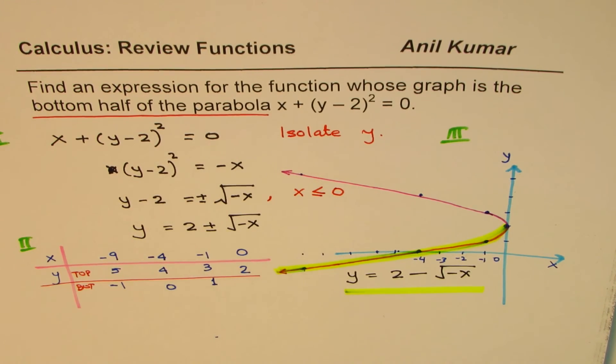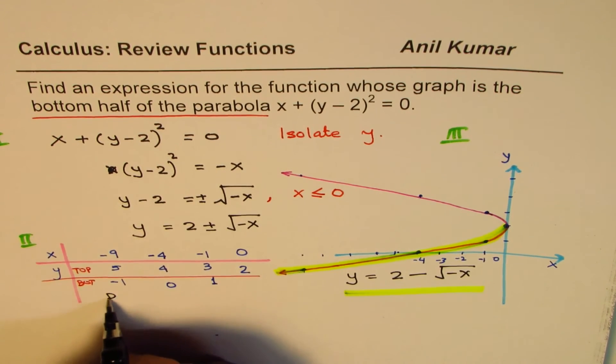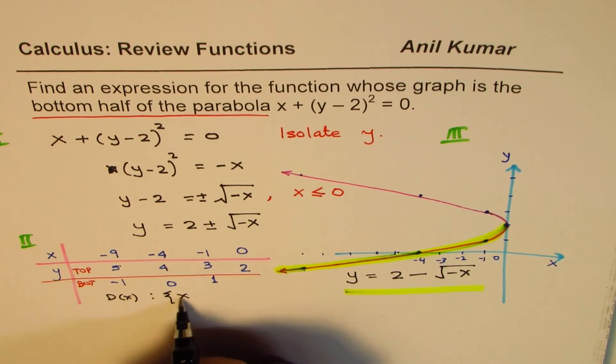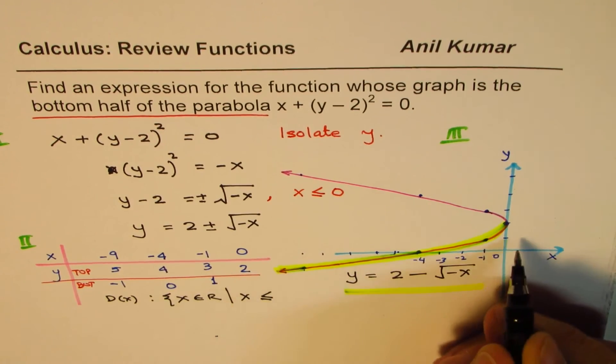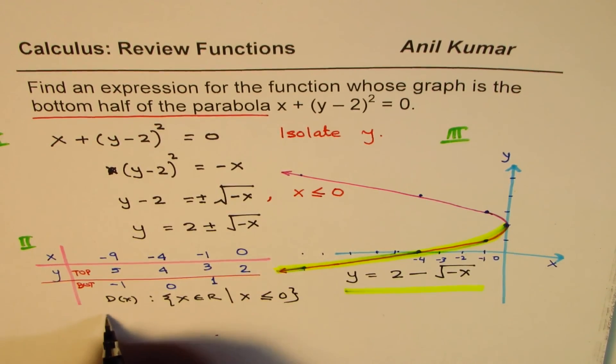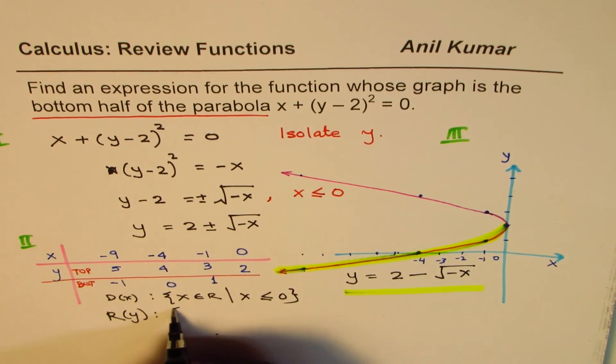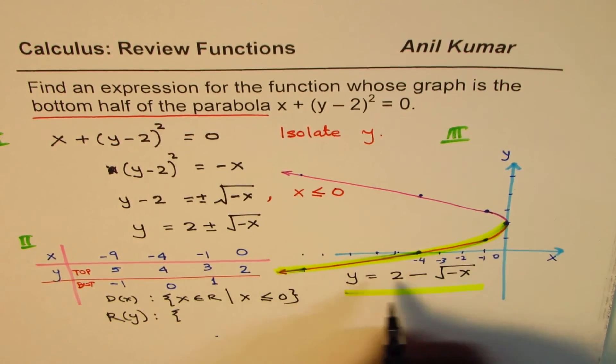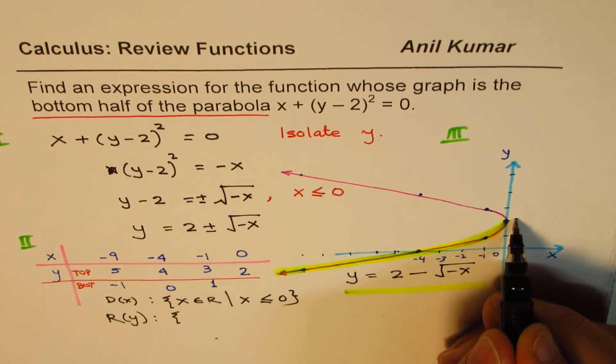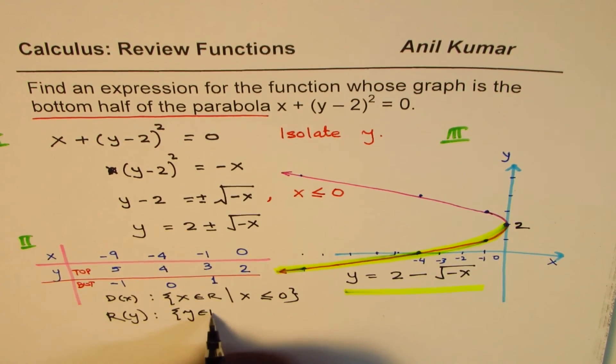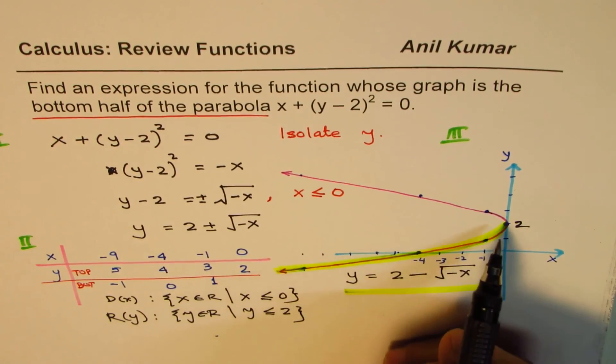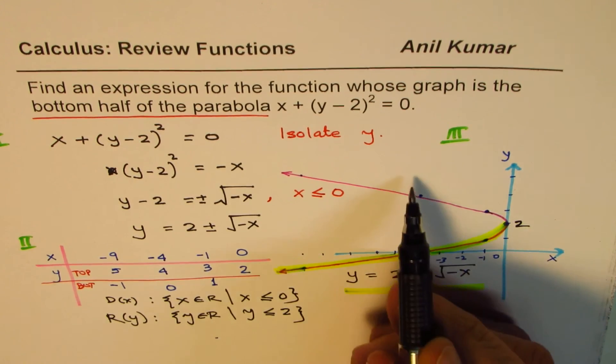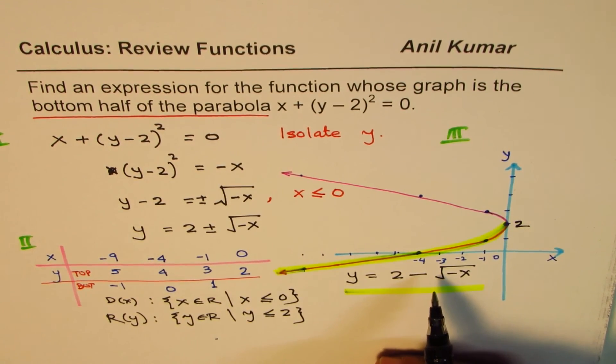Now, as an exercise, you can write the domain and range of this function. Domain of this function is x belongs to real numbers where x ≤ 0. The range for this function is, now we are talking about the bottom portion only, so this is the point at 2, so y belongs to real numbers where y ≤ 2. If I consider the top part also, it is not a function since it will fail the vertical line test.